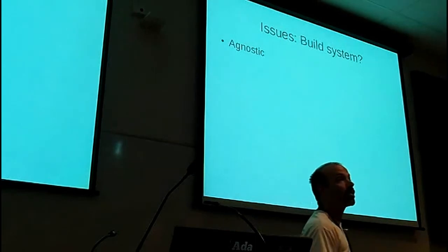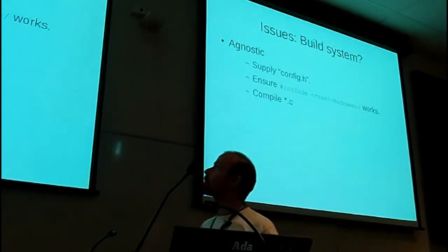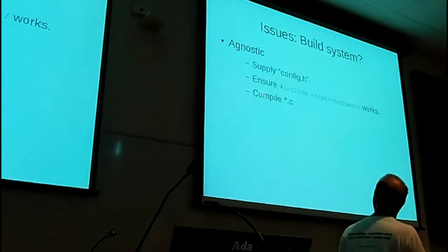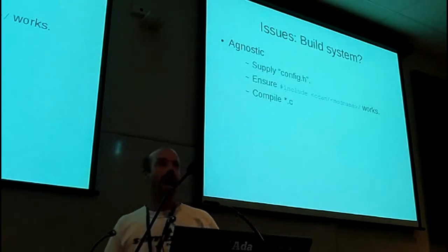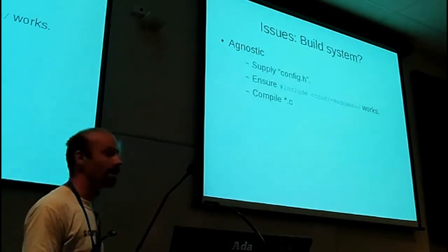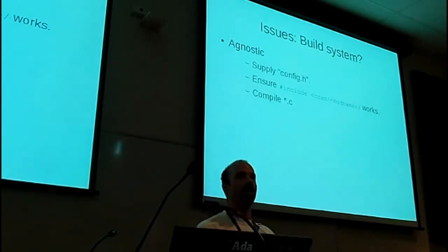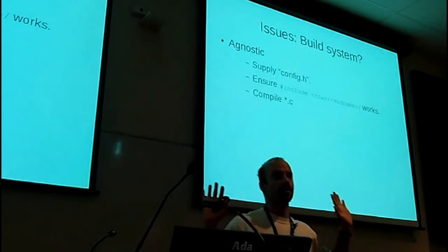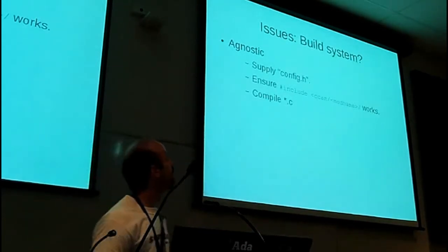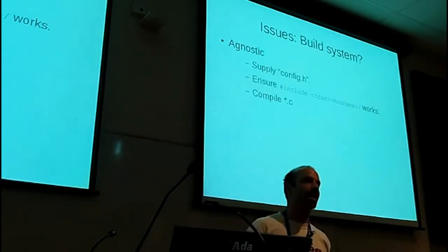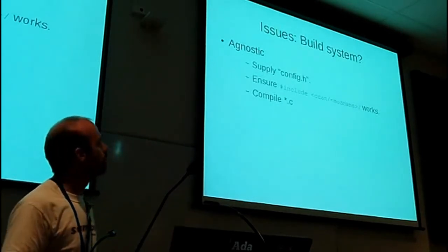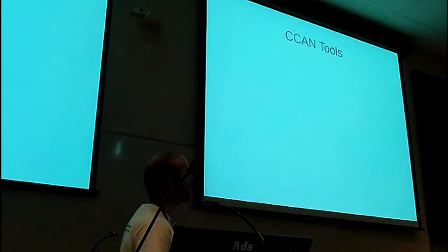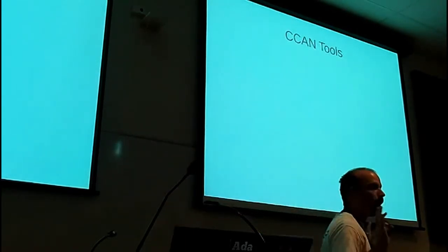Build system — what build system are you going to use? The answer is: we're not. We've supplied a set of rules: you will provide a config.h we can hash-include, you will allow hash-including so we can reach other modules you depend on, and you will compile all the C files in the top-level directory — that is the module. There's no conditional build. If you want a conditional build, you go #if HAVE_BLAH at the top of your C file and #endif at the bottom, ending up with an empty C file if you don't have that feature. We don't do anything else. We provide a makefile helper that does it for you, but we don't buy into the build system.